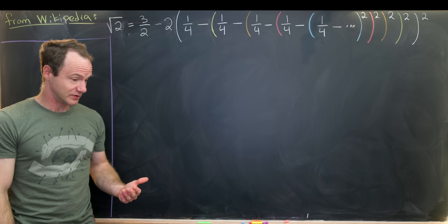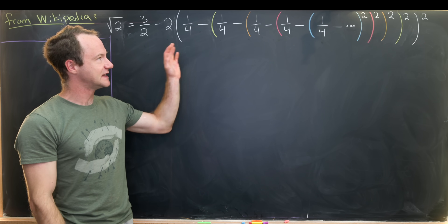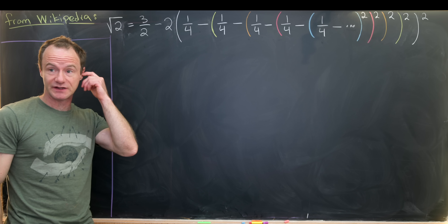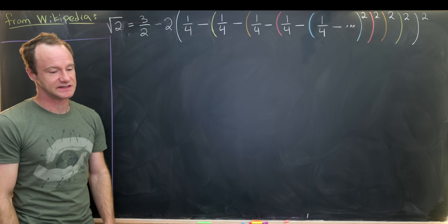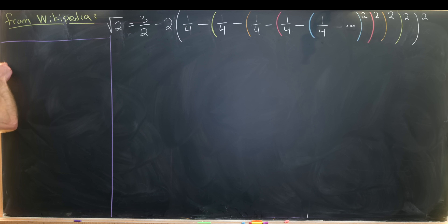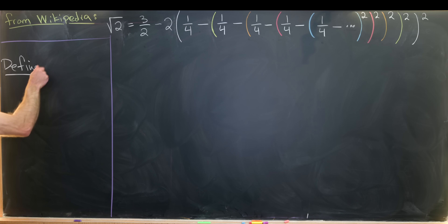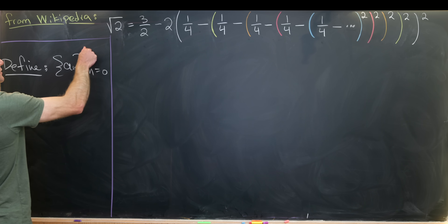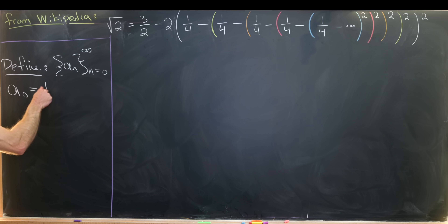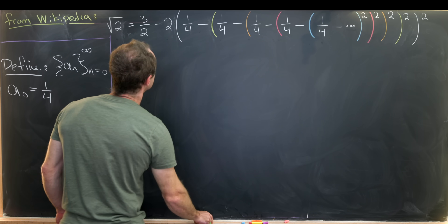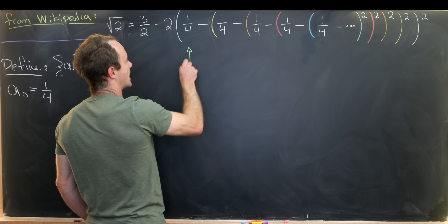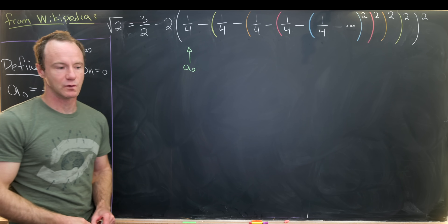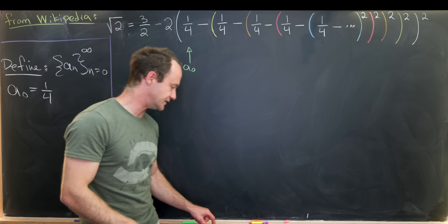In order to get a handle on what's going on here, we need to write this down more carefully. Anytime you have an infinitely repeated sequence of things happening, the nice way to do it is with a recursively defined sequence. So let's define a new sequence aₙ as n goes from 0 to infinity, with a sub 0 equal to 1 quarter — that would be like our a sub 0 term right here.